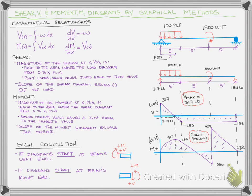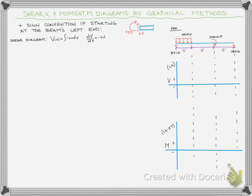So we want to draw this now using the graphical method. It really helps to go ahead and put a blank shear and moment diagram under your free body diagram and bring down those points of interest — like the end of the 100-pound load or where the applied moments are — because those discontinuities are going to cause changes in our shear and moment diagram.